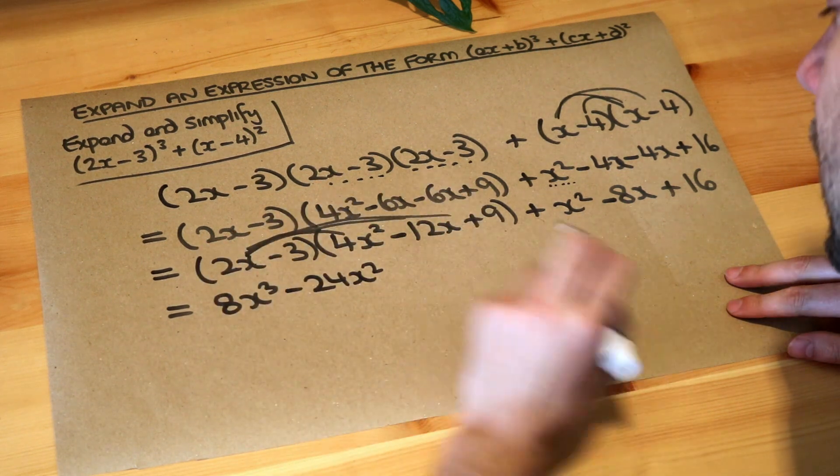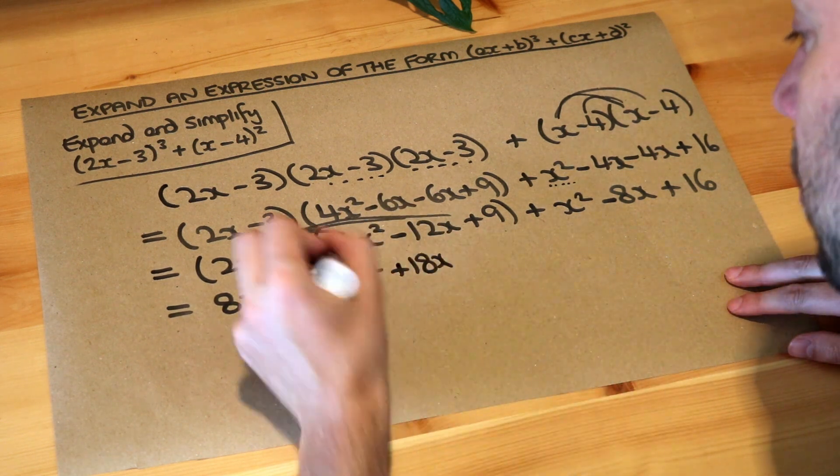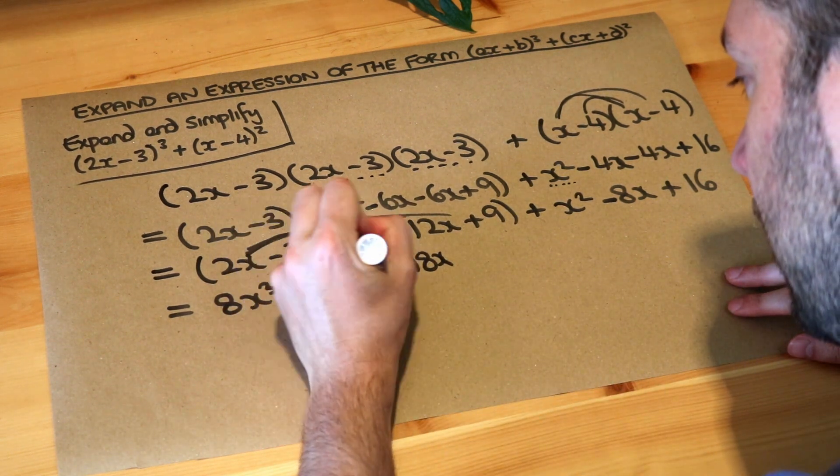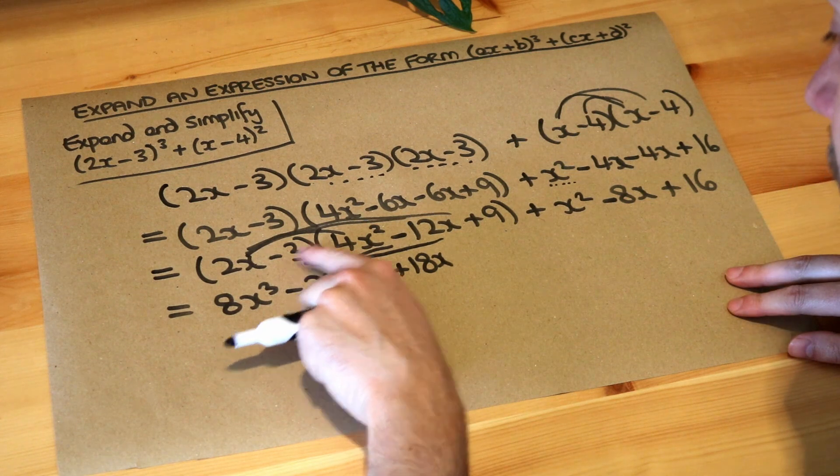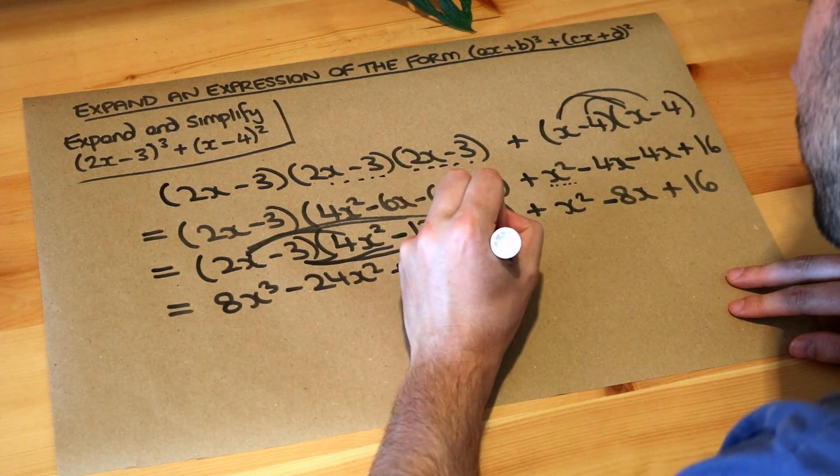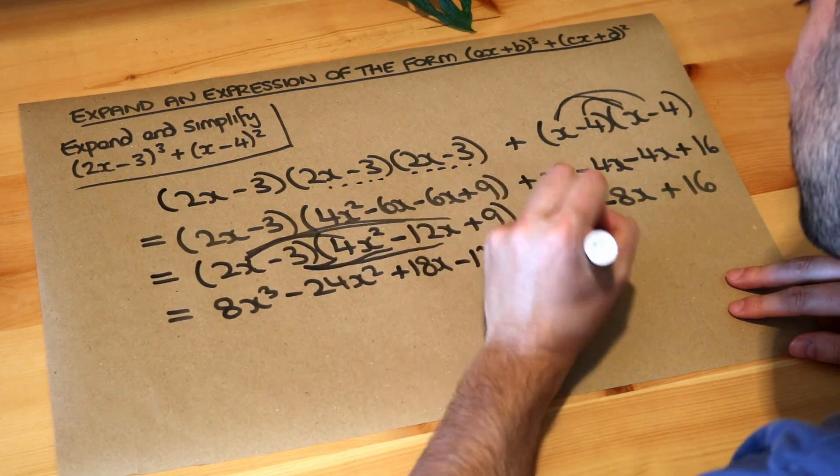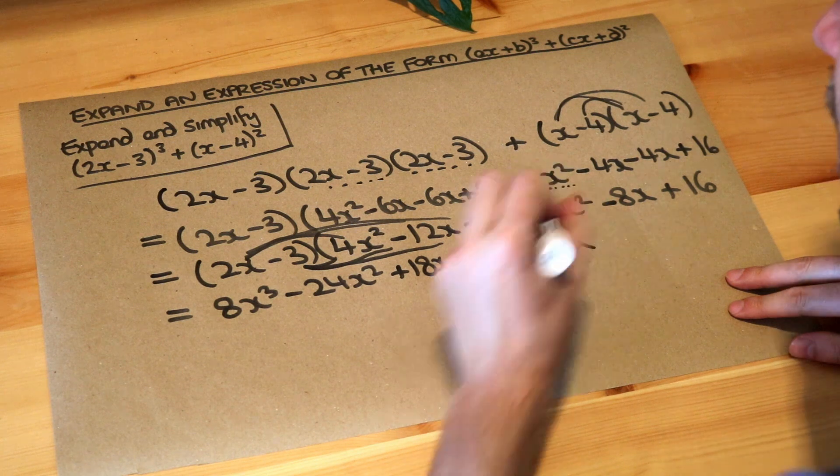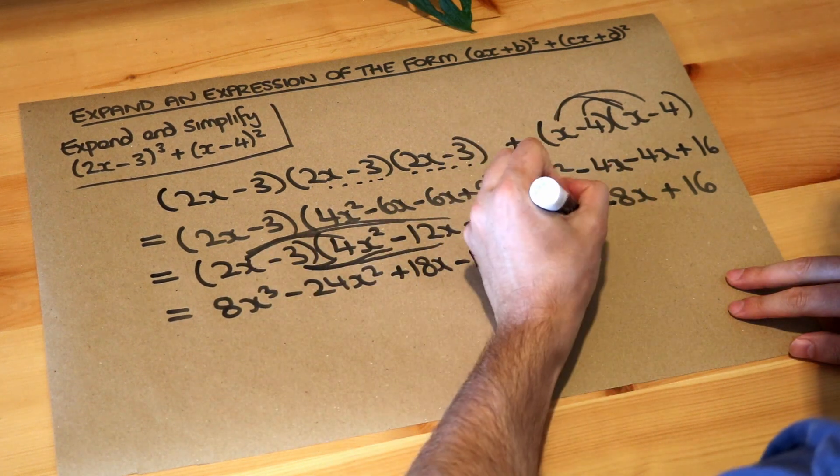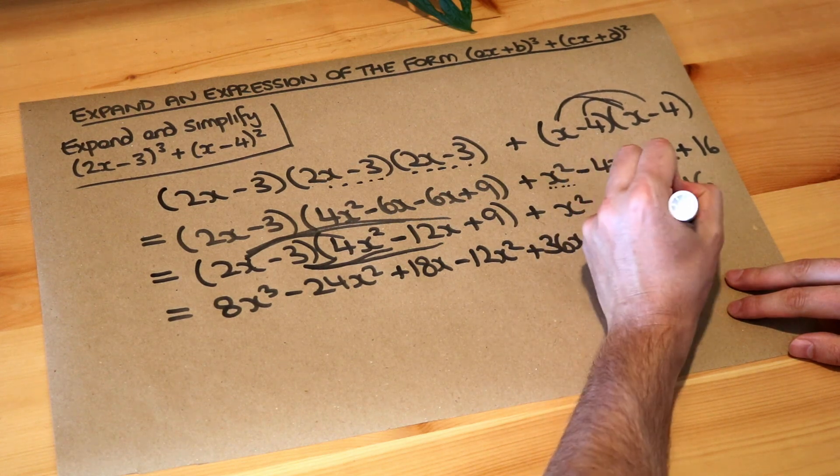And now we do the -3 multiplied by each of these things: -3 times 4x² is -12x², -3 times -12x is +36x, and -3 times 9 is -27. We've still got these three terms here, so we've still got the +x², the -8x, and the +16.